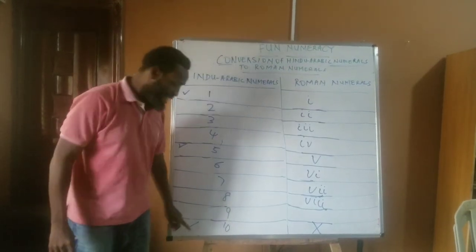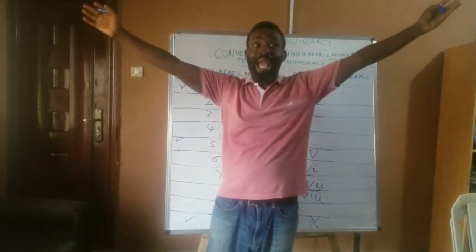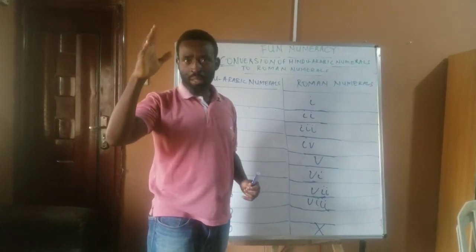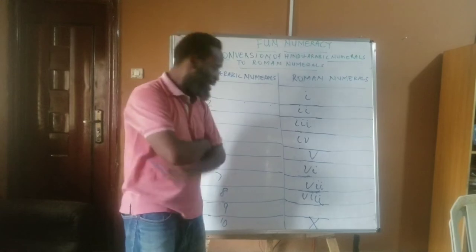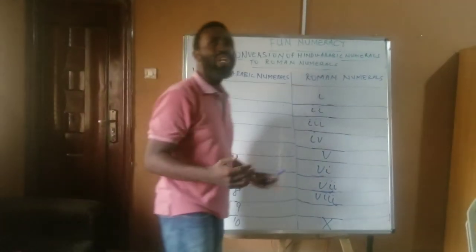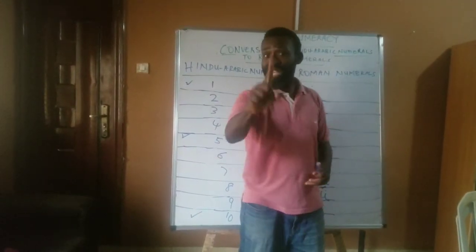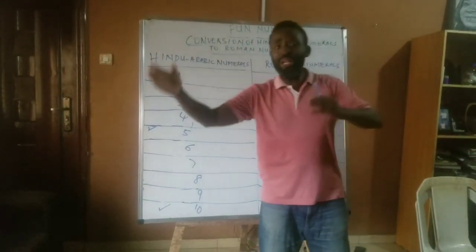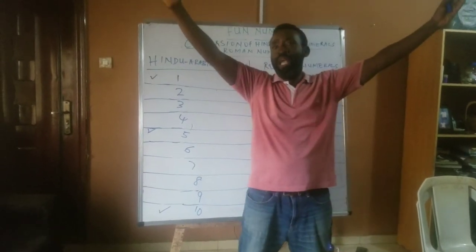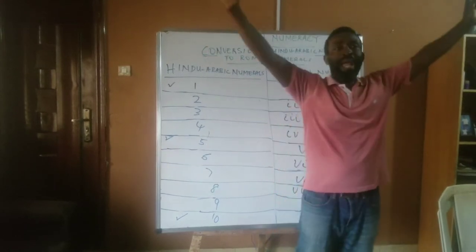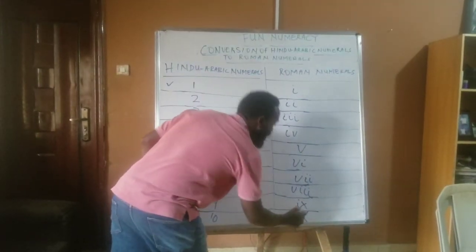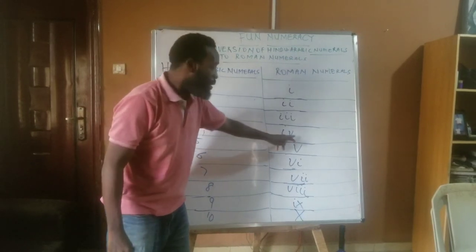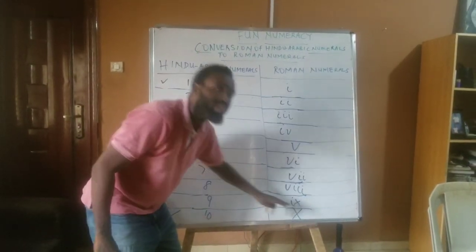Now we're down to the last one. Don't forget that we already have 10, which is capital letter X. Is 9 before 10? Yes — 9 is one number before 10. So we're talking about one number before we get to the magic letter X. That gives us I before X, which is IX. This is similar to number 4, which is I before V. And 9 is 1 before X, which is 1 before 10.